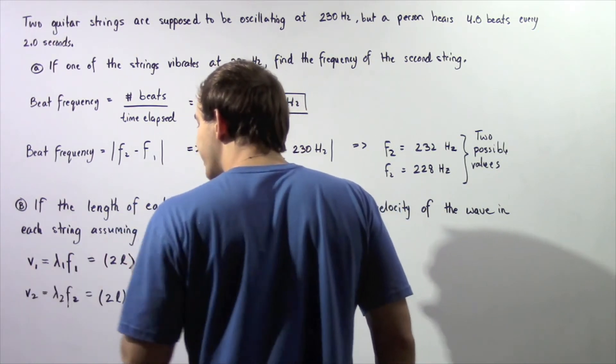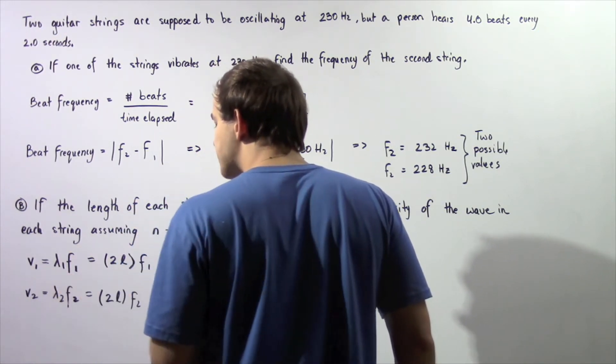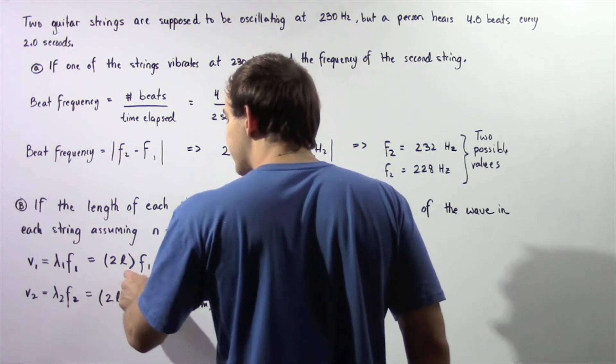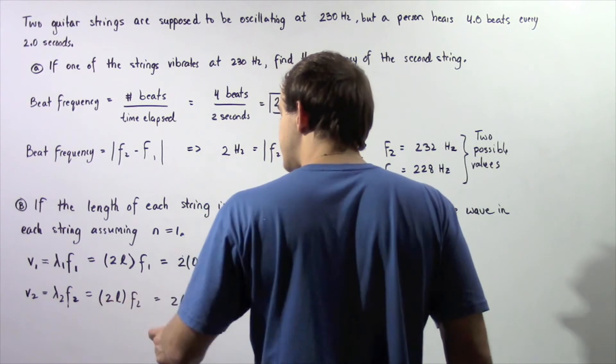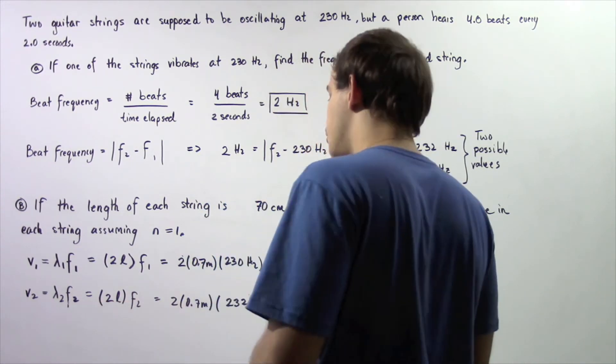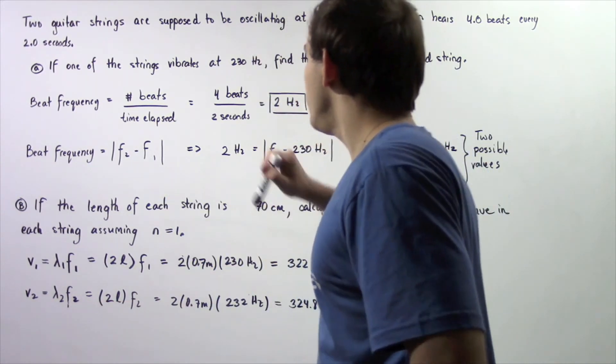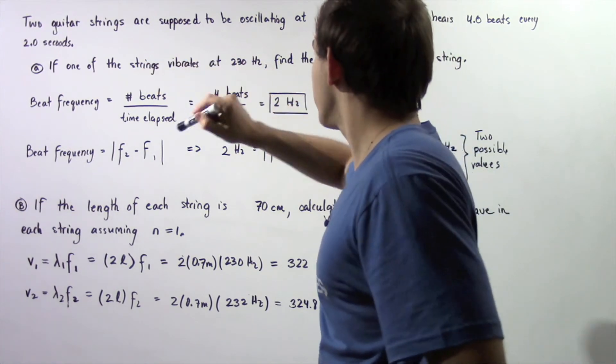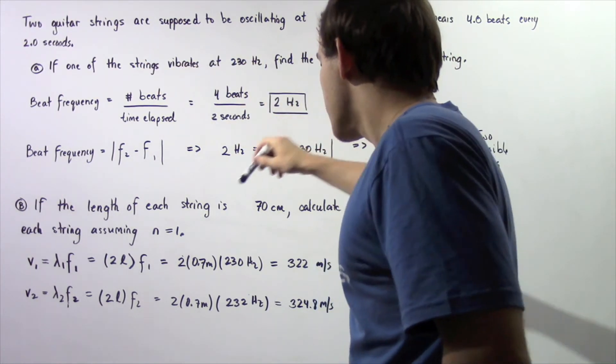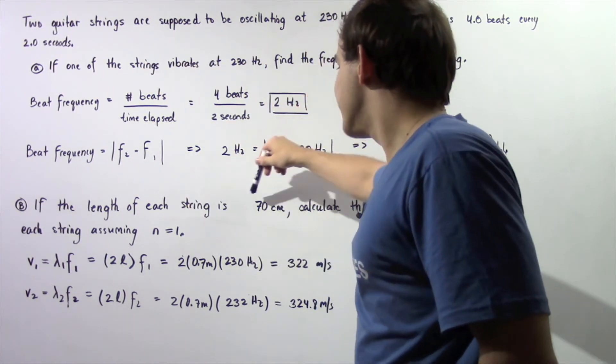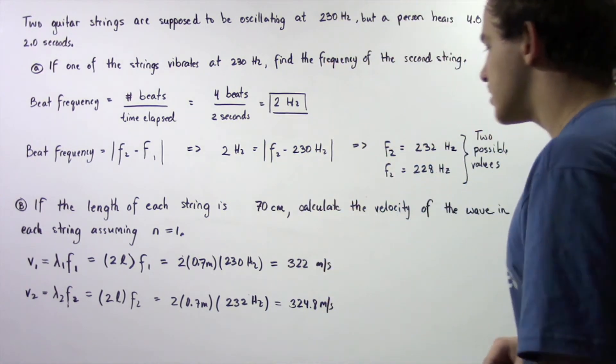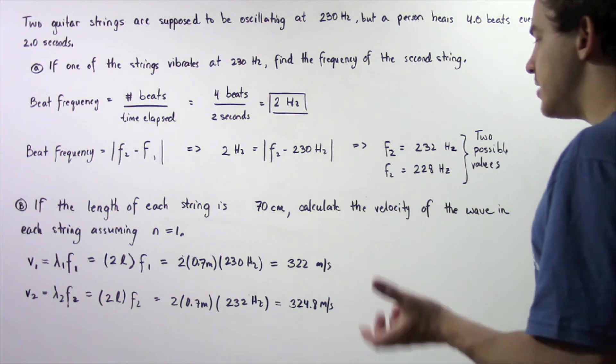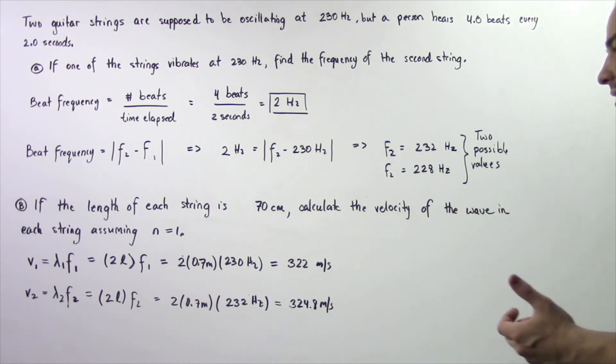So V1 equals lambda 1 times F1, which is equal to 2L times F1. V2 equals lambda 2 times F2, which is 2L times F2. F1 is 230 Hertz, so 2 times 0.7 meters times 230 Hertz gives us a velocity of 322 meters per second.